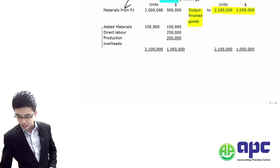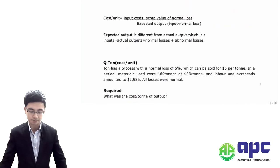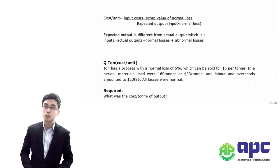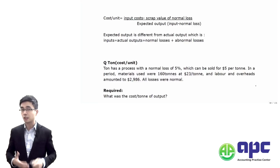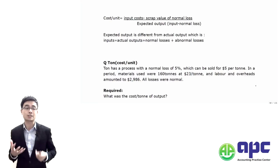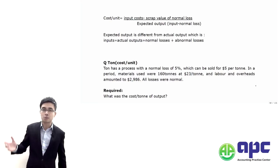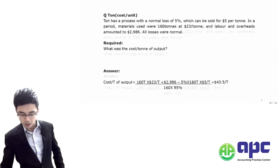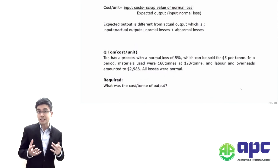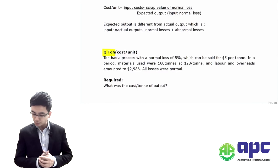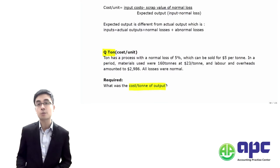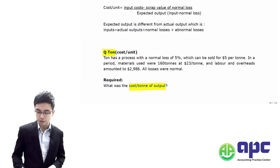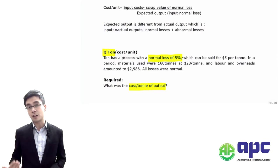It's very important to understand the concept of process costing to calculate the cost per unit. You input 100 litres of oil and get 98 litres out, so you need to estimate the cost per unit — in this case, cost per litre. For example, whether it's worth $10 per litre or $5 per litre. Let me show you a comprehensive example called Tone.